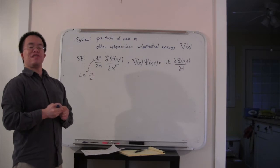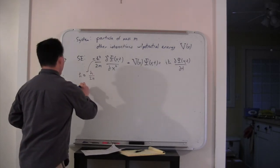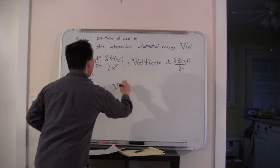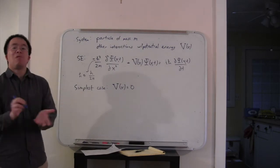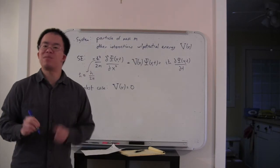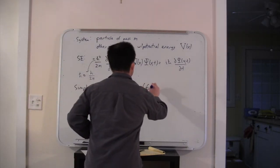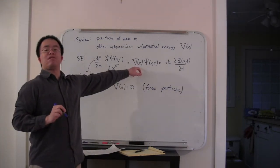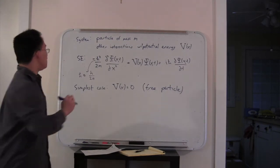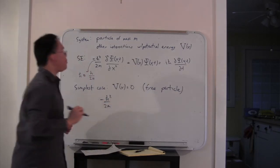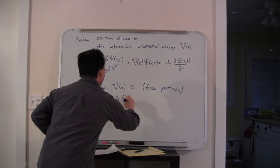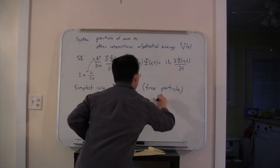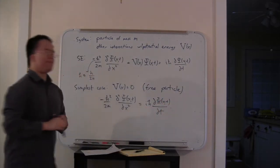Let's first think about solutions. The simplest case is where the potential energy V of x is zero, where there's no interaction with anything. We call this the free particle. If V of x equals zero, this term goes away, and the Schrödinger equation reduces to minus h-bar squared over 2m d squared psi dx squared equals ih-bar partial psi partial t.